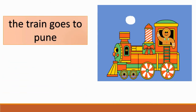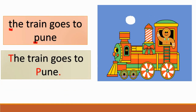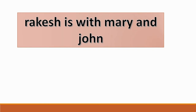What can you see in the picture? This is a train. 'The train goes to Pune.' T is the initial letter and Pune is a proper noun — a place name — so P is capital. 'Rakesh is with Mary and John.' Rakesh, Mary, and John are proper nouns, so the initial letters of these words are capital. Remember: the first letter of a proper noun must be capital.